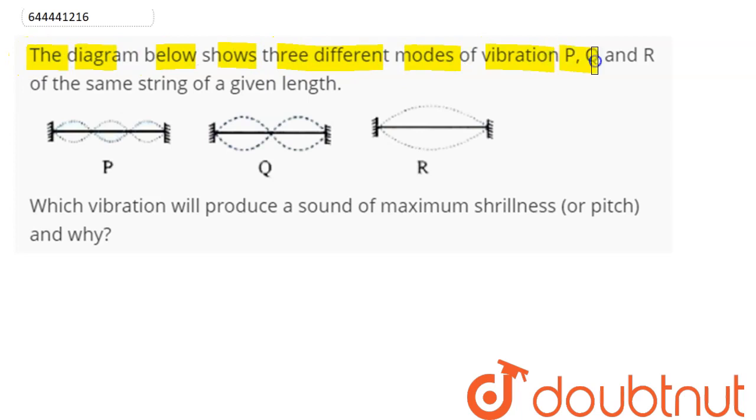The diagram below shows three different modes of vibration P, Q and R of the same string of a given length. Which vibration will produce a sound of maximum shrillness or pitch and why?